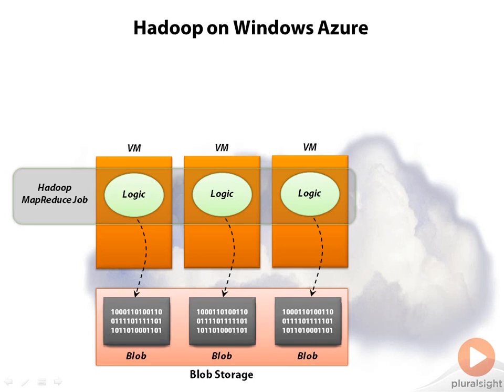Hadoop began life and is still commonly used in on-premises data centers where there are no blobs. So Hadoop actually has its own storage mechanism called HDFS — Hadoop Distributed File System. Applications running on Azure expect to access HDFS data, and so Azure provides the HDFS API on top of blobs.